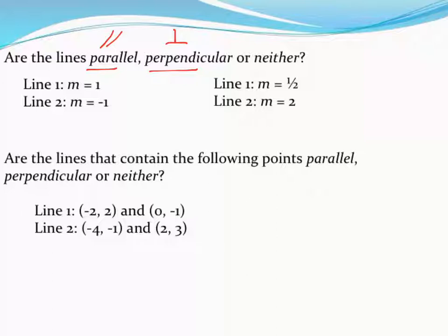And then if neither of those things are true, then those lines are just nothing, they're just two lines that intersect. So first up, they've given us two slopes, m is slope.